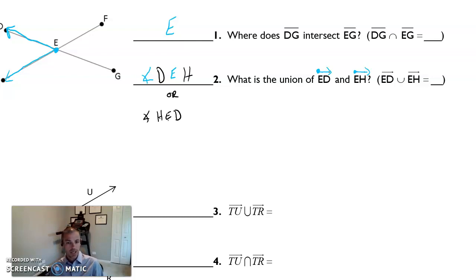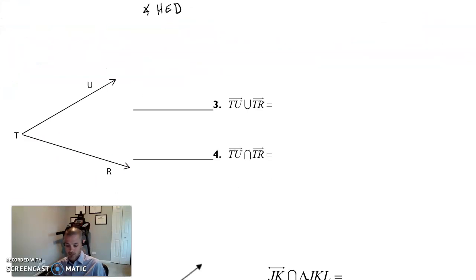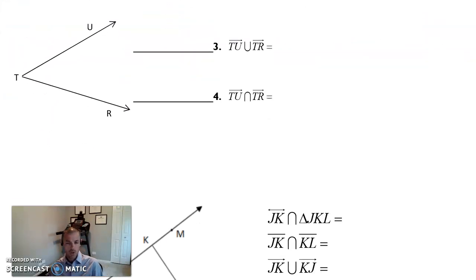All right, take a minute and try numbers three and four. And if you get those, keep going, but I'm going to go over numbers three and four specifically next. So press pause, try three and four. All right, so for number three, again, it's the union of two rays. The union of two rays is oftentimes going to form an angle,